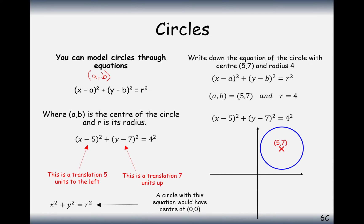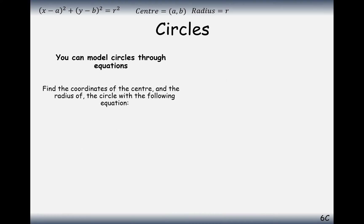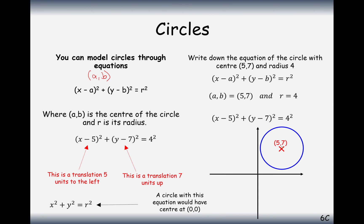Be really careful when you sketch your circles, because the radius here is 4, so it's not going to overlap any of the axes. That's a key part of drawing a correct diagram in these circle questions.